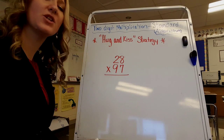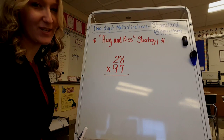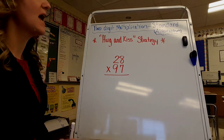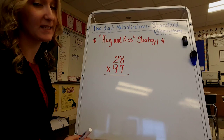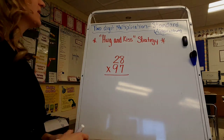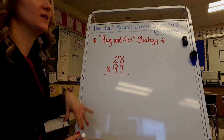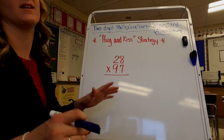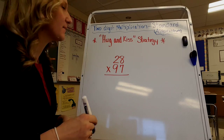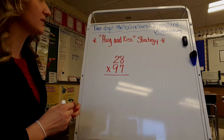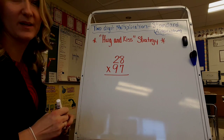Hi guys, I'm going to be teaching you how to multiply two-digit numbers using the standard algorithm, or like I always like to say, the way I learned how to do it. And I do that using the hug and kiss strategy, which I think is just so much fun and it's easy to remember, so I like to use that when I am multiplying big, big numbers.